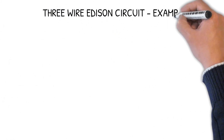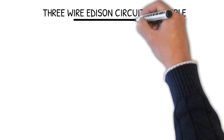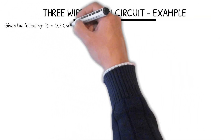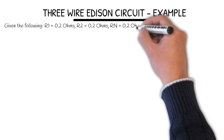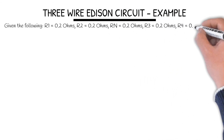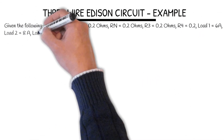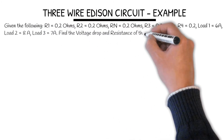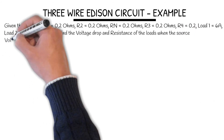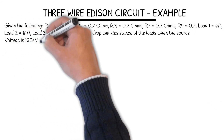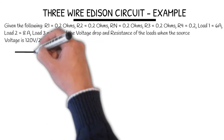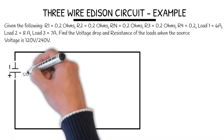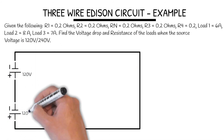3-Wire Edison Circuit — one last example. Given: all resistors have 0.2 ohms of resistance, but this time we have two sources and three loads. Load one is 6 amps, load two is 8 amps, load three is 7 amps. Find the load volt drop and resistance when the source voltage is 120/240 volts. This example is a little different — we have a 240-volt load as well.